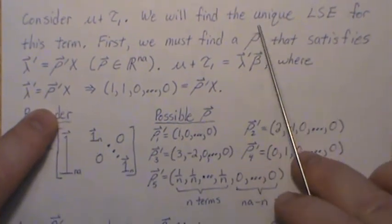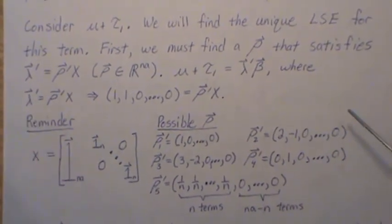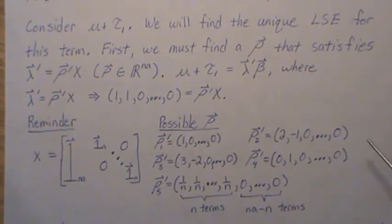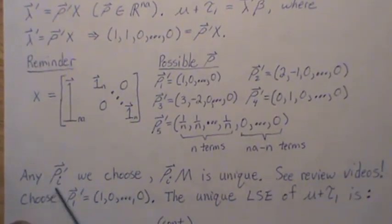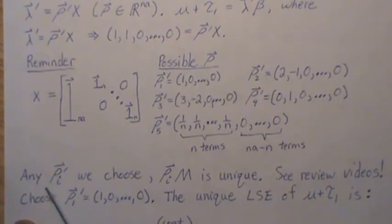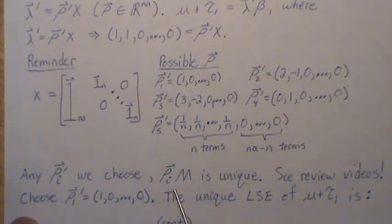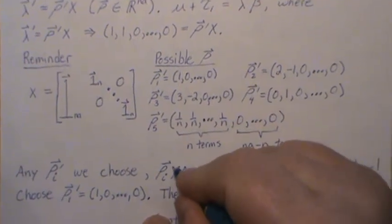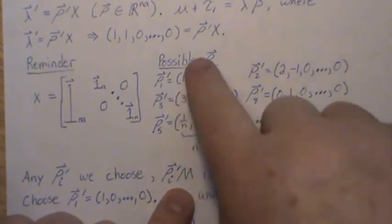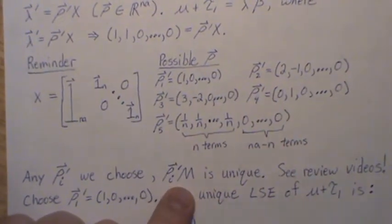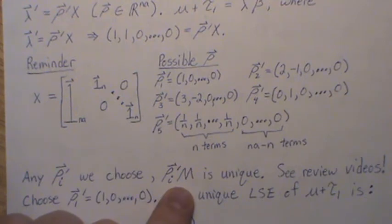There's an infinite number of possibilities. But somehow we're going to get a unique least squares estimate? To me, that doesn't make sense just yet. Now, I'm telling you that it is unique. Any row i that we choose, row i times μ is unique.